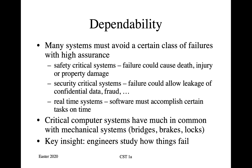Just to remind ourselves: safety-critical systems are those where failure could cause death, injury, or property damage. Security-critical systems are those where failure could allow leakage of confidential data or fraud against payment systems. And real-time systems are those where the software has to accomplish certain tasks on time. For example, a braking system on a car is both real-time and safety-critical.